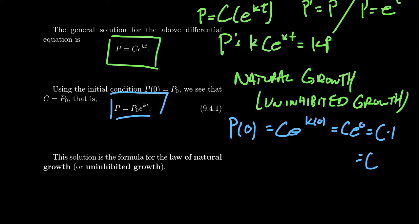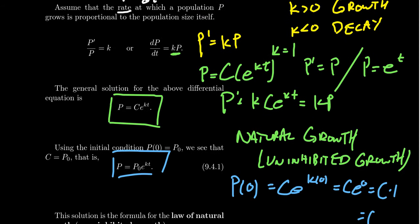But this model right here, P equals P naught E to the KT, is a classic growth model. And I want to emphasize that this equation that we use followed from this very simple assumption. That if things grow proportional to their size, then this is how we model the growth.